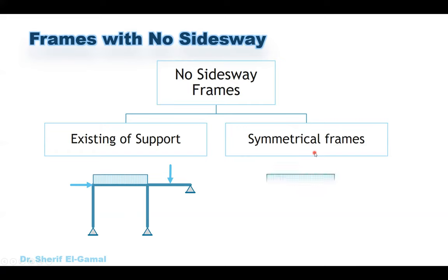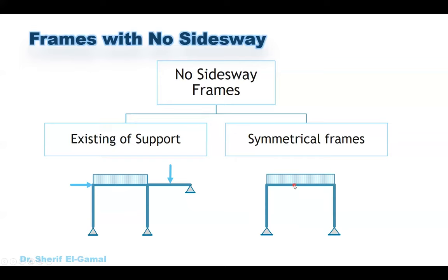There is also another case when we have symmetrical frames. We can see that this frame is symmetric in geometry and the load is also symmetric. Under this symmetry in geometry and load, no side sway will occur. However, if you apply any horizontal force, change the support to one fixed and one pin, or if the load is unsymmetric, then we will have a side sway. Any other frame with a support to prevent horizontal movement will also have no side sway.